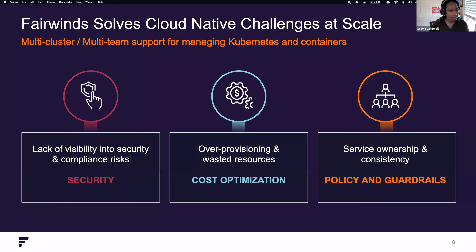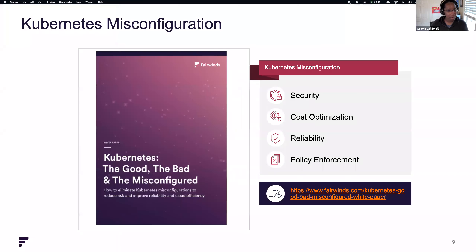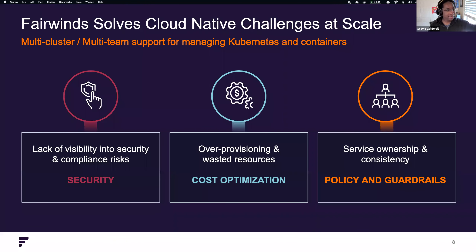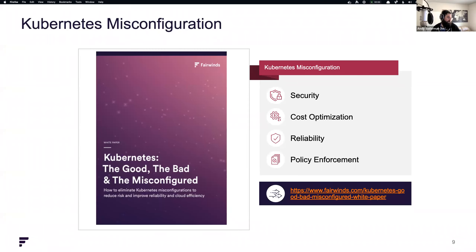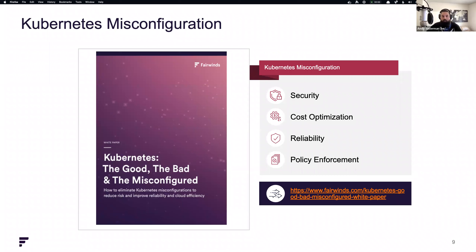We've talked about Insights and we have a white paper available — 'Kubernetes: The Good, the Bad, the Misconfigured — How to Find Misconfigurations.' It covers detecting API versions, security misconfigurations, cost misconfigurations, reliability issues like not setting probes, and policy enforcement for business-specific policies across all workloads. Dave will be sending out a link to everyone after the event along with the link to the recording.